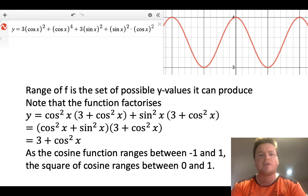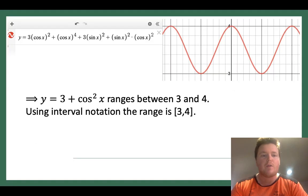So cosine is a function that goes between minus 1 and 1 in terms of its range, so the square of it is going to be between 0 and 1, and therefore our function is going to range between 3 and 4. So the answer for that is B.